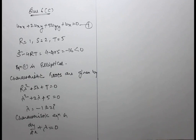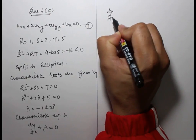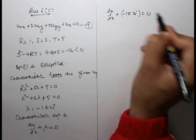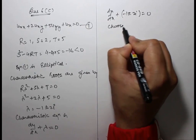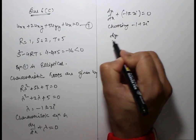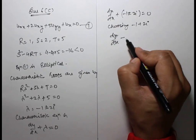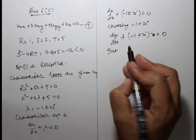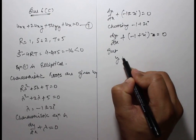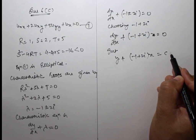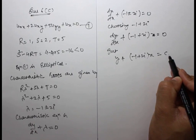The characteristic roots from Rλ² plus Sλ plus T equals 0 give λ² plus 2λ plus 5 equals 0, so λ equals minus 1 plus or minus 2i. The characteristic equation is dy/dx plus λ equals 0, so dy/dx equals 1 minus or plus 2i.